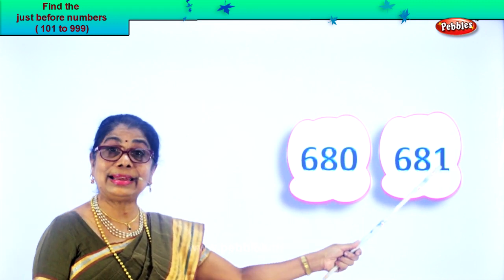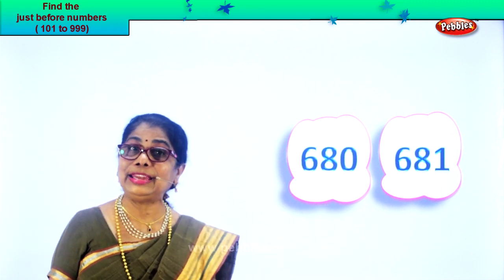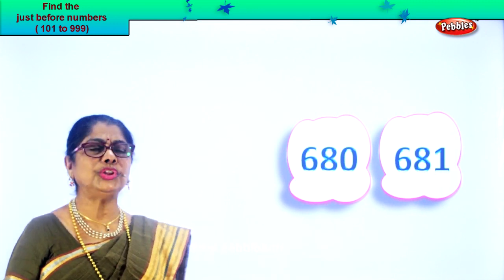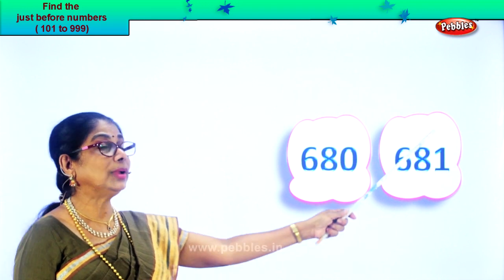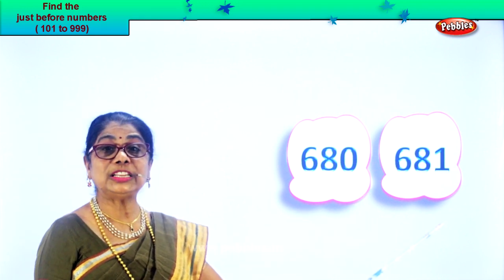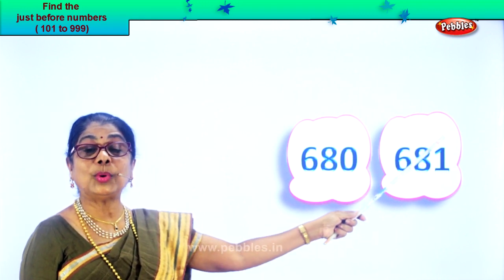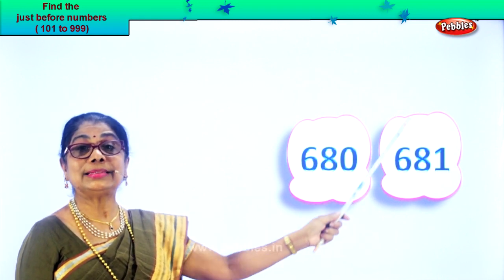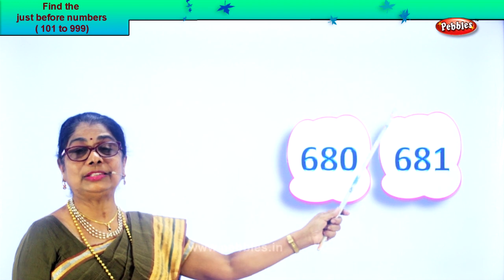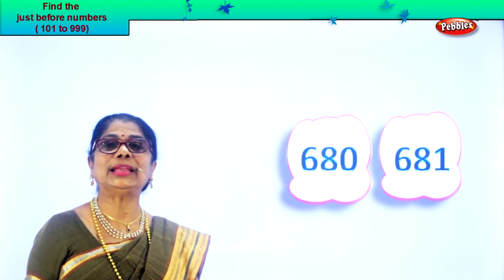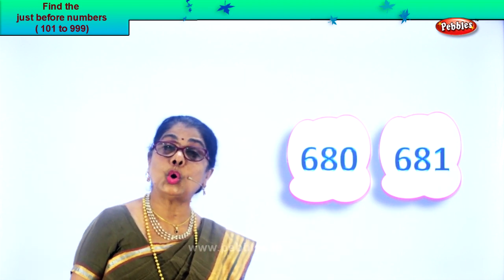Six hundred and eighty-one. All you need to do — look at the first place, that is the ones place, second the tens place, and you get the number before.